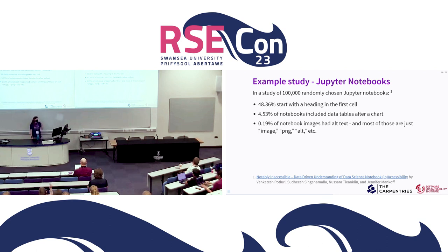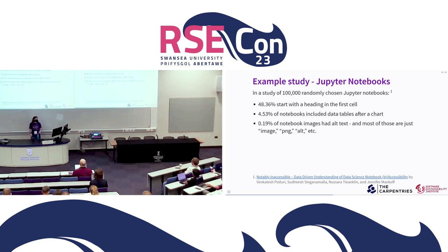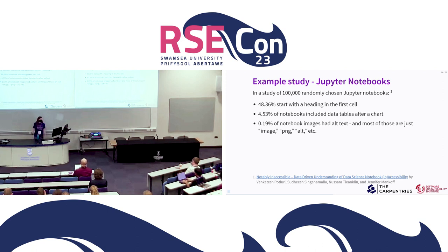I want to talk about an example study that examined Jupyter notebooks specifically — an increasingly common way of publishing a piece of research. In a study of 100,000 randomly chosen Jupyter notebooks, about half of them start with a heading in the first cell. Headings are really useful as landmarks for anyone to get around a notebook, but especially screen reader users navigate a lot using heading landmarks. So about half start with a heading, which is fairly good but could be a lot better. 4.5% of notebooks that had a chart also included a data table, which is useful for people who cannot see or interpret your chart — an easy win that a lot of people don't think to do.